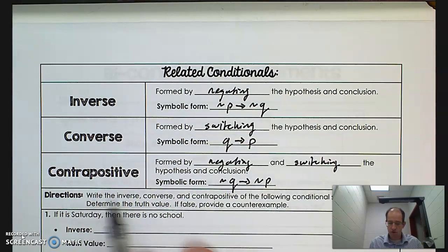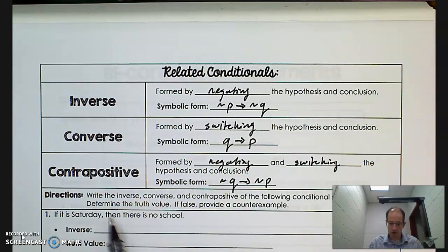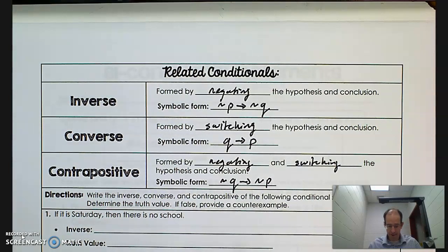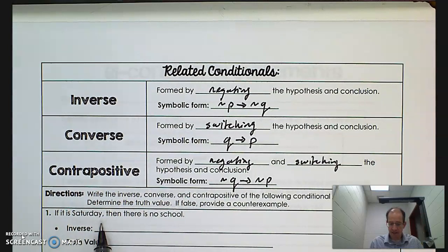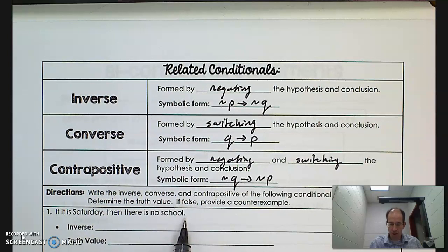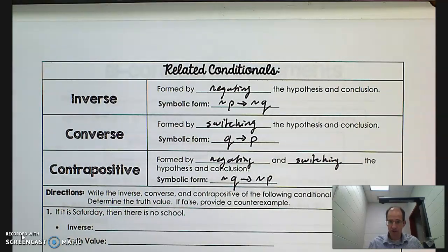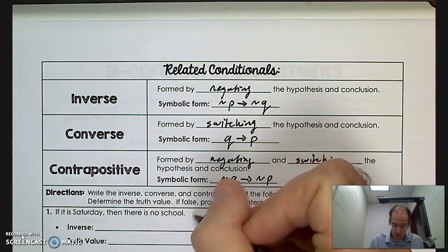Write the inverse, converse, and contrapositive of the following conditional statements, and determine the truth value. If false, provide a counterexample. 'If it is Saturday, then there is no school.' This is the original conditional statement. Evaluating its truth value: if it is Saturday, then there is no school — true.